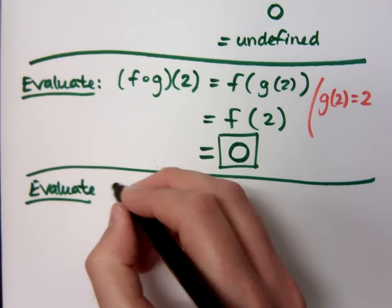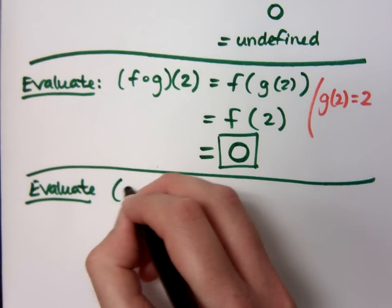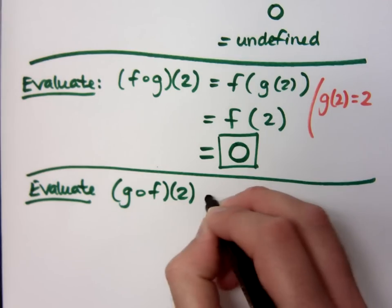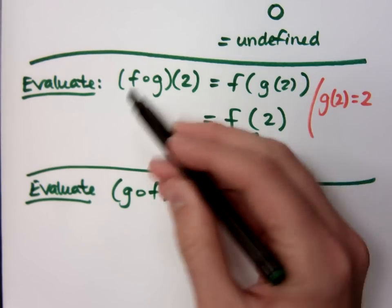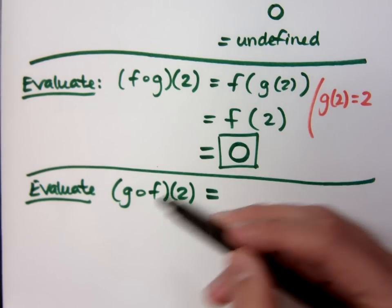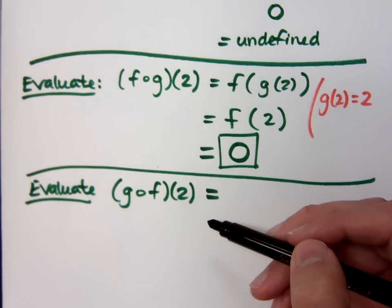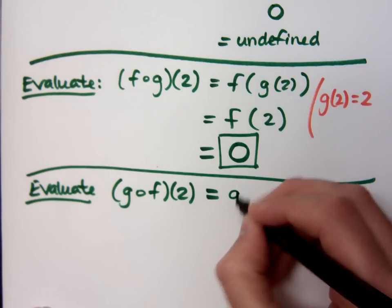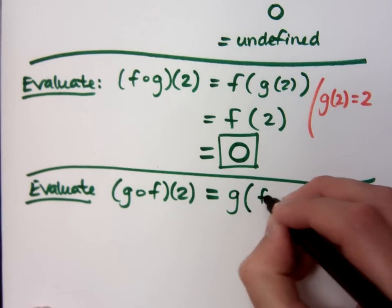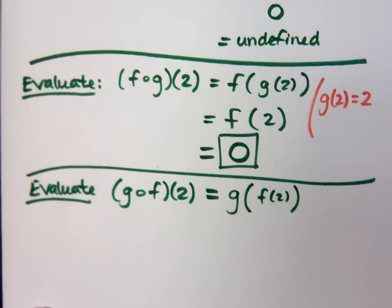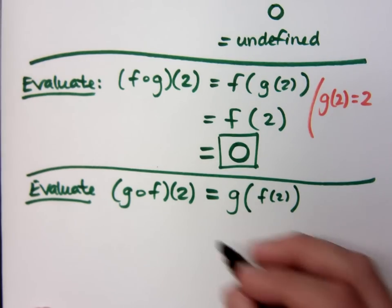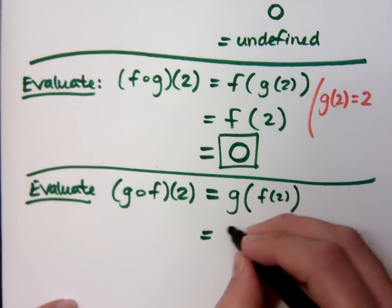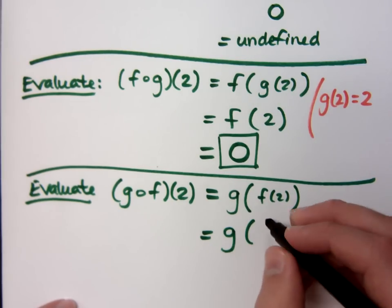What if I ask you to evaluate g of f of 2? Do you think that's going to equal 0? I mean, f of g of 2 gave me 0, but is g of f of 2 the same thing? No, it's stuffing things a little bit differently. That means you go g of f of 2. Right, but you plugged 2 into f, and you got 0 last time, so you got 0 plugged into g.